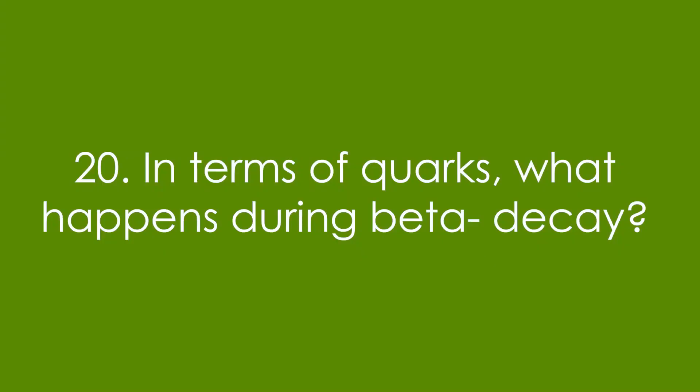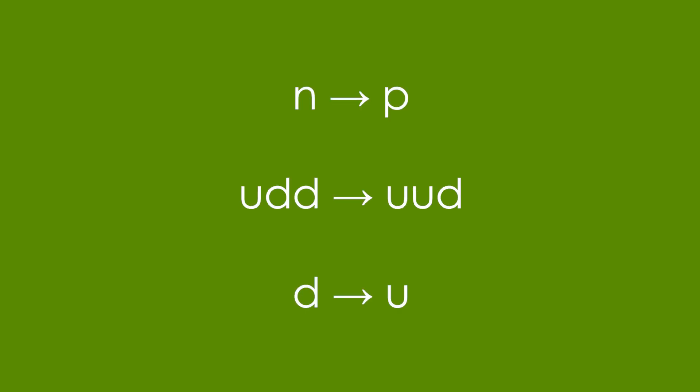20. In terms of quarks, what happens during beta minus decay? Well, a neutron turns into a proton, so that means that up, down, down turns to up, up, down. That means we have a down quark turning into an up quark.